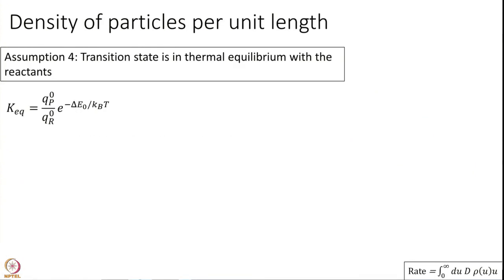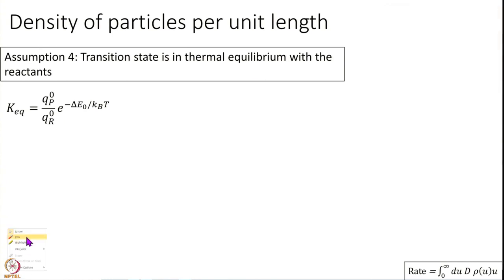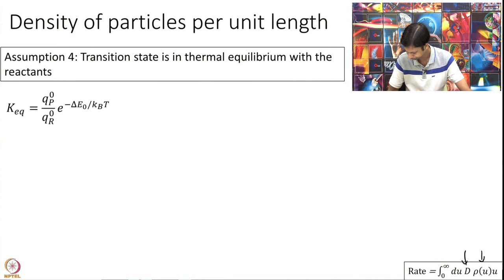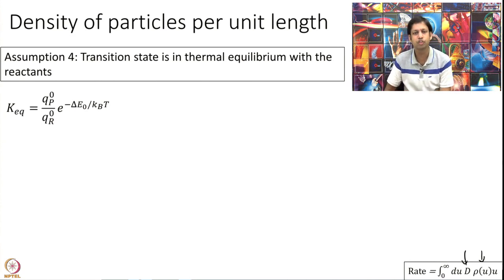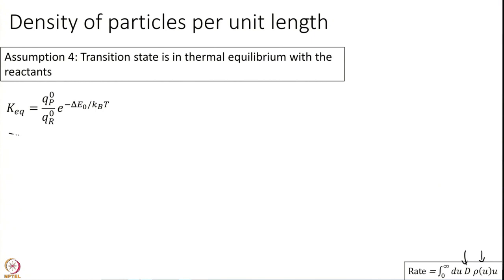We now need to calculate two quantities: D, the density of particles per unit length, and rho, the probability distribution over speeds. Once we calculate these, we perform the integral and we are done. We start with the density of particles per unit length, using the relation between the equilibrium constant and partition functions derived earlier.